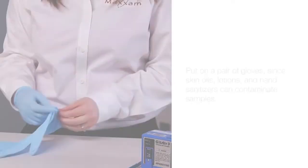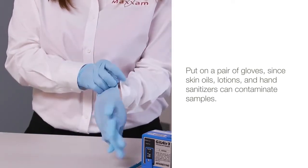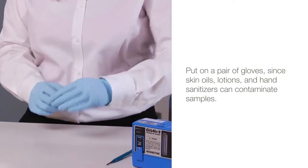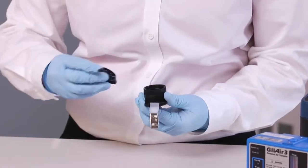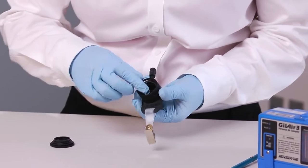First we'll demonstrate how to load an IOM cassette into the sampler body. Put on a pair of gloves since skin oils, lotions and hand sanitizers can contaminate samples. Remove the faceplate on the IOM sampler and examine the inside to ensure the o-ring is intact.